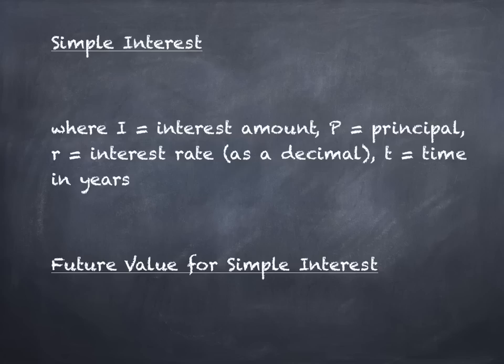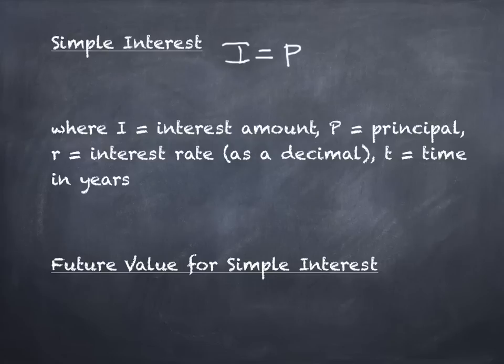The first thing we're going to look at today is the time value of money, and the first concept is simple interest. Simple interest is calculated as I equals P times R times T — where I is the interest, P is the principal, R is the interest rate as a decimal, and T is time.